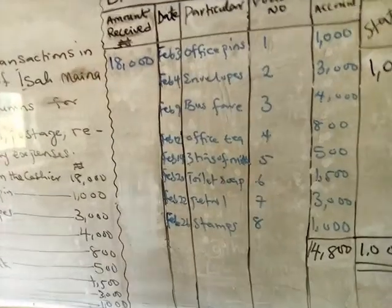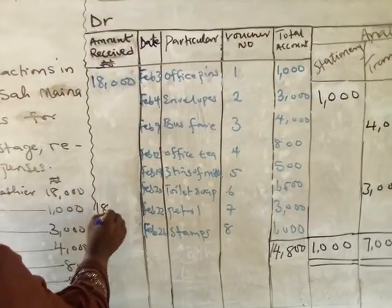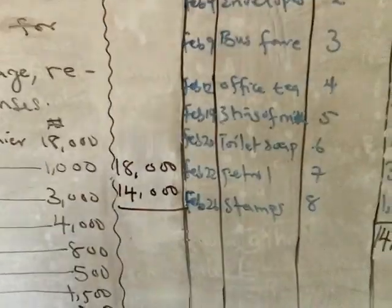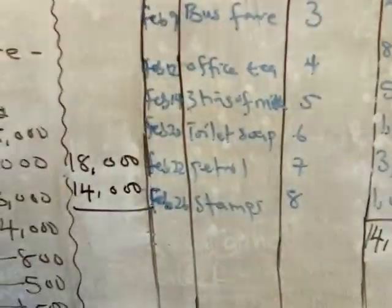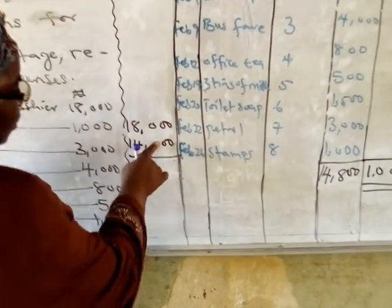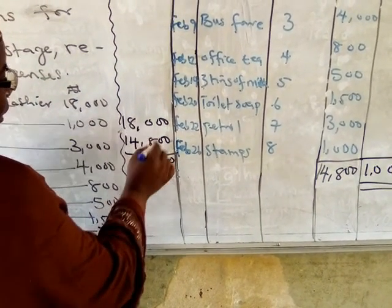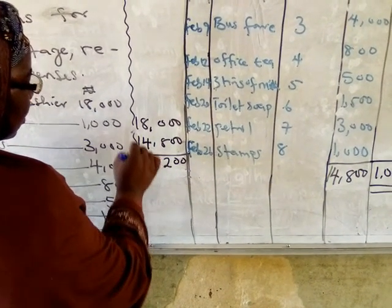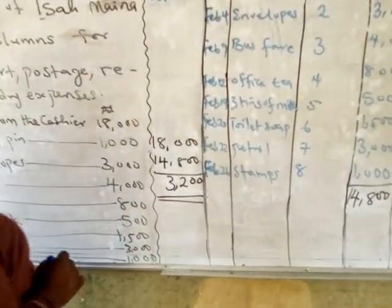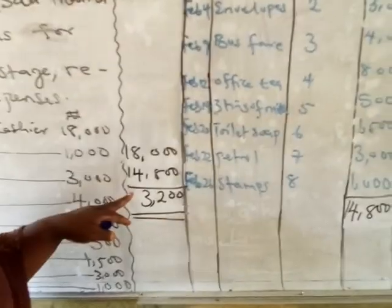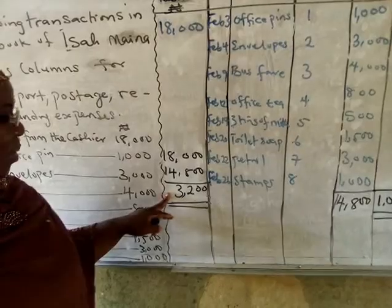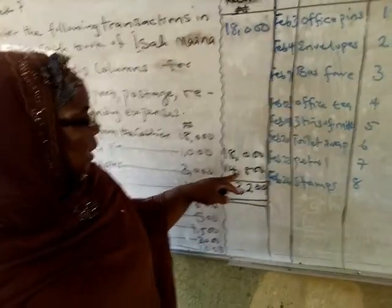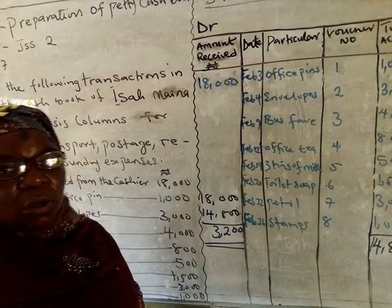We bring down the $18,000 and minus $14,800 to find out how much is left. The balance remaining with the Petty Cashier is $3,200. To start making payments again in the subsequent month, she will be given $14,800 to bring the total back to $18,000 — this is what we call reimbursement.